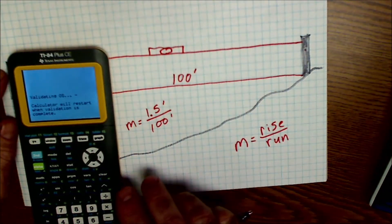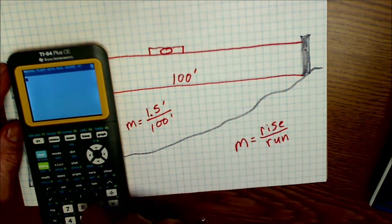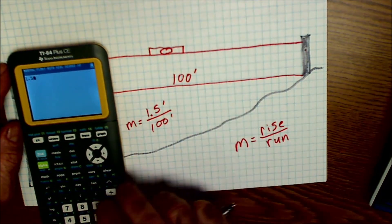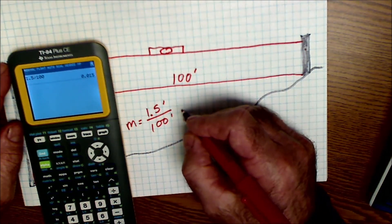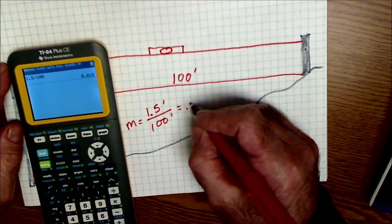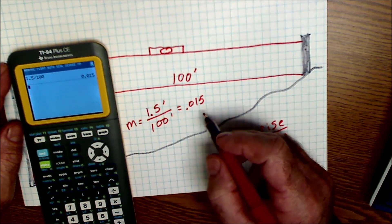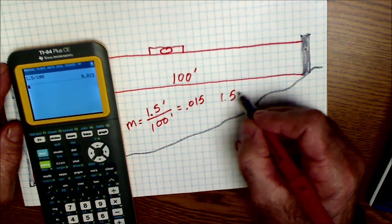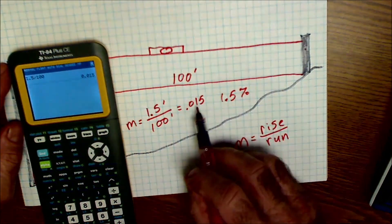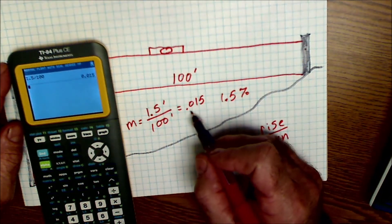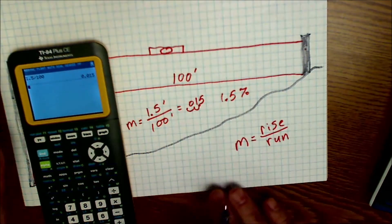I could use my calculator and get a rise per run. 1.5 divided by a hundred is 0.015, or 1.5% slope. To convert from that decimal to a percentage, I just move over 1, 2, and I get 1.5 percent.